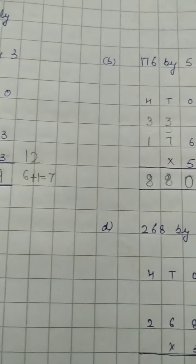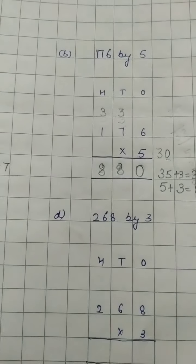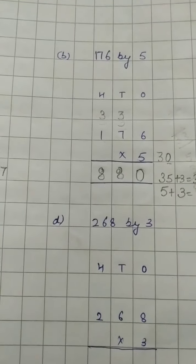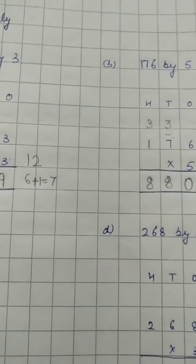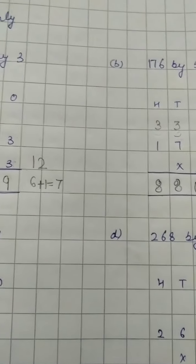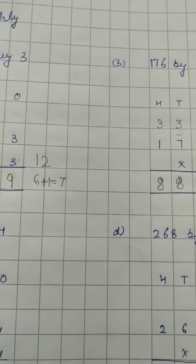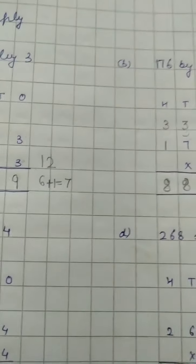Part c is 164 multiplied by 4, and part d is 268 multiplied by 3 — multiply these yourself. Practice every day. Bye bye!